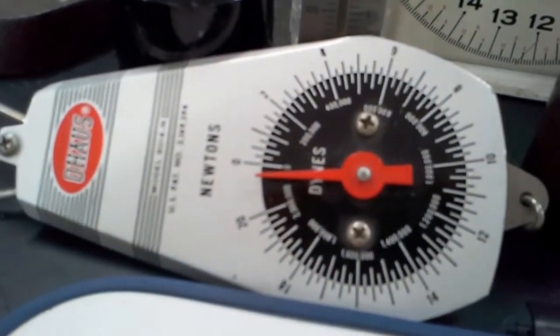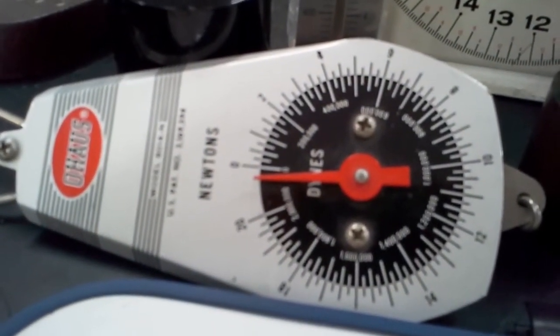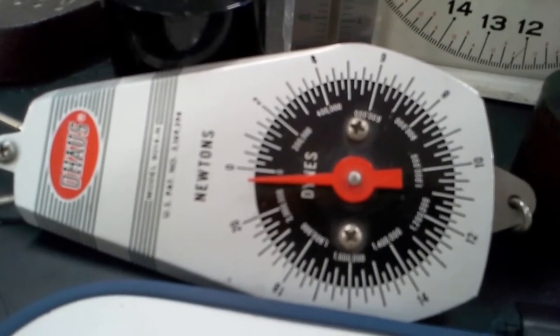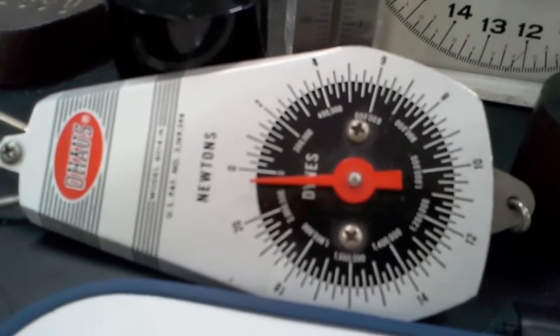This last one is an old scale. It's got two weight units, newtons and dynes. Dynes is an obsolete unit that we don't use anymore. But this is a really good scale. So that's why it's here.